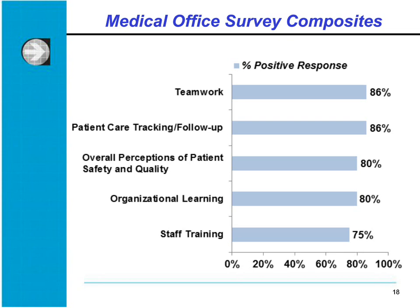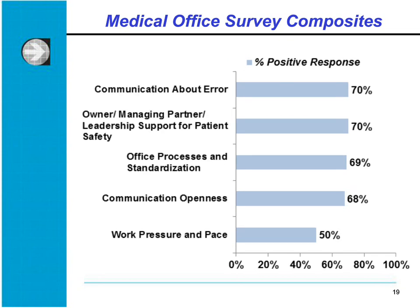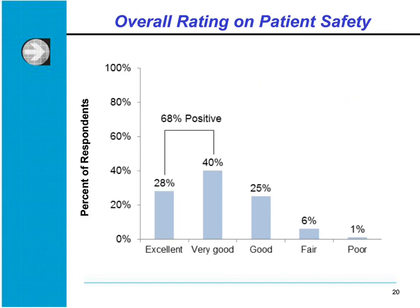The lowest-scoring composite was work pressure and pace at 50 percent positive response, which measures whether there are enough staff and providers to handle the patient load and whether the office work pace is not hectic. The other composites clustered in the 68 to 70 percent range. Each respondent also gave an overall patient safety rating — 28 percent said excellent and 40 percent said very good, totaling 68 percent positive.